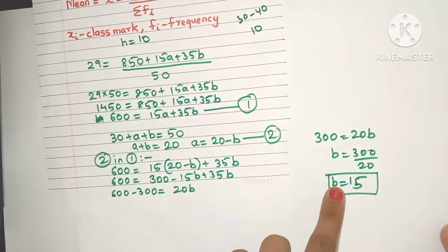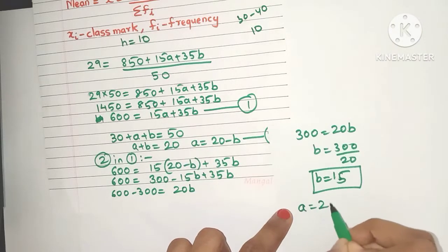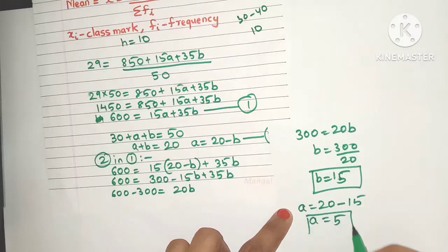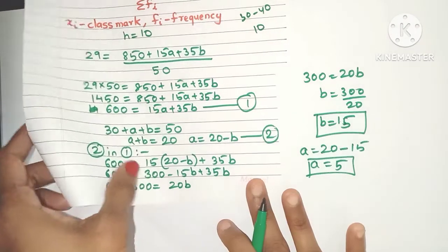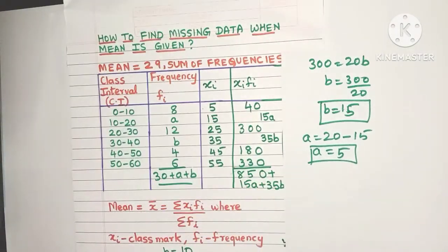Now just substitute this value of b here. a is 20 minus b, which is 20 minus 15, so a equals 5. This is how you find all the missing frequencies when the mean of the data is given.